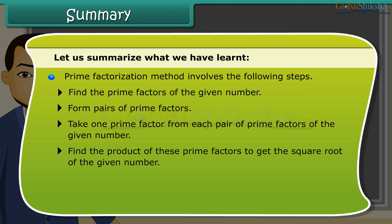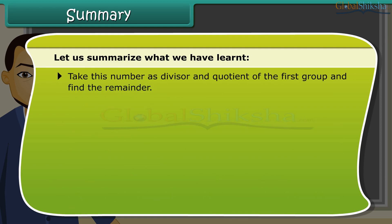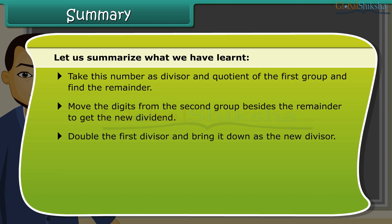Find the prime factors of the given number. Form pairs of prime factors. Take one prime factor from each pair of prime factors of the given number. Find the product of these prime factors to get the square root of the given number. Long division method involves the following steps. Find the greatest number whose square is less than or equal to the digits in the first group. Take this number as divisor and quotient of the first group and find the remainder. Move the digits from the second group besides the remainder to get the new dividend. Double the first divisor and bring it down as the new divisor. Complete the divisor and continue the division.